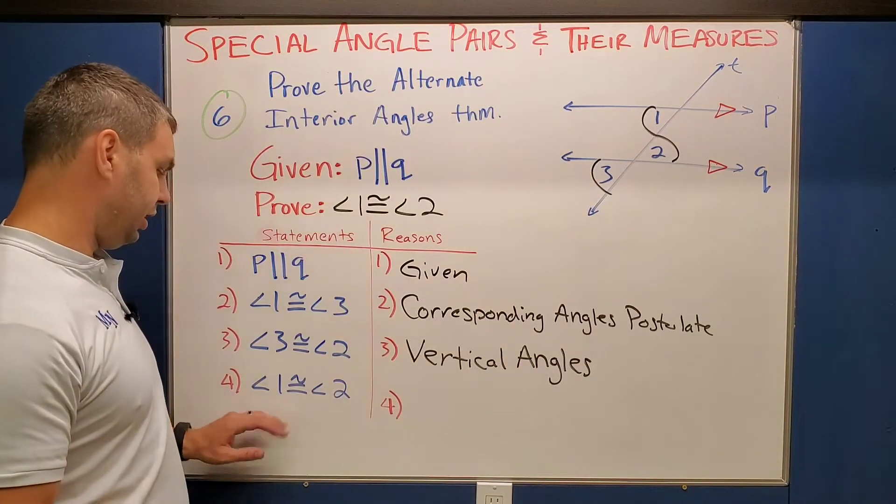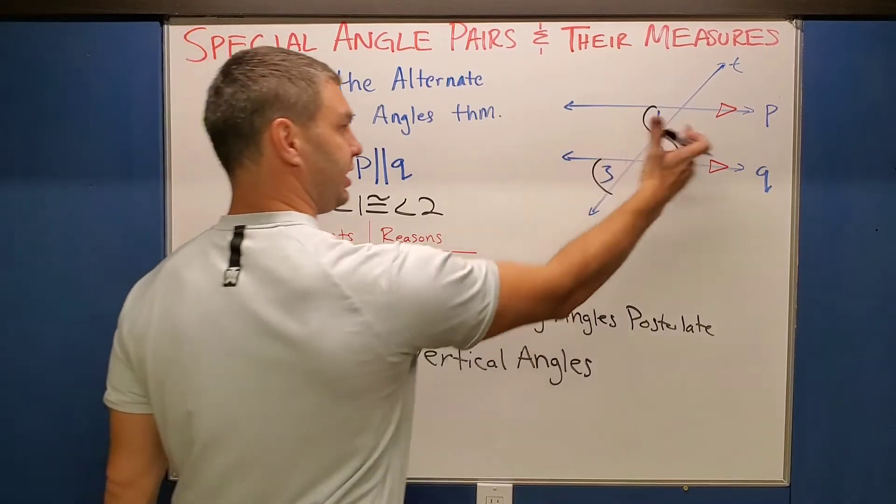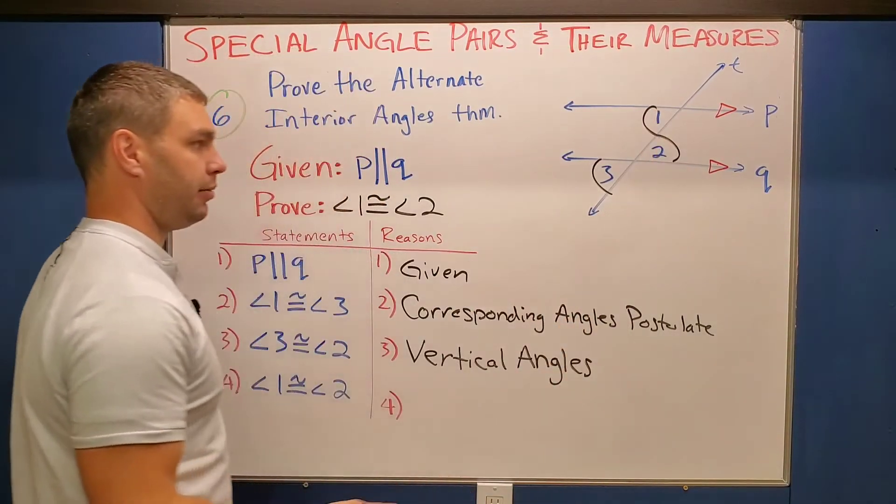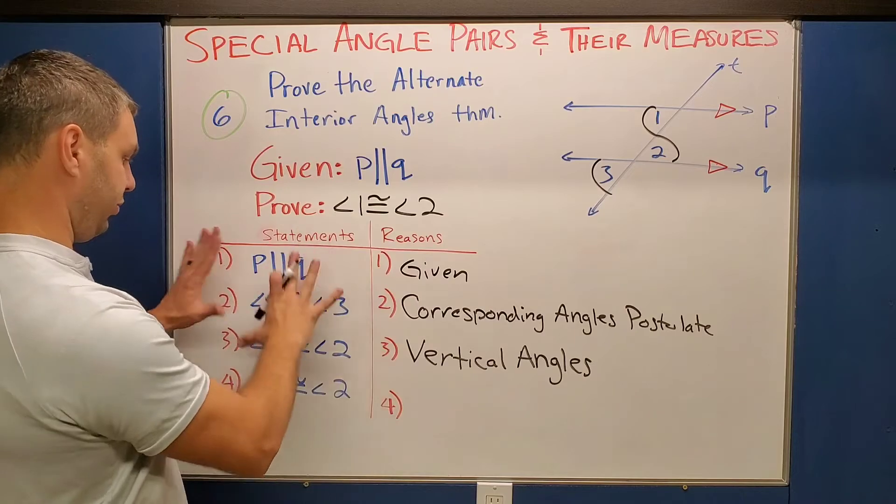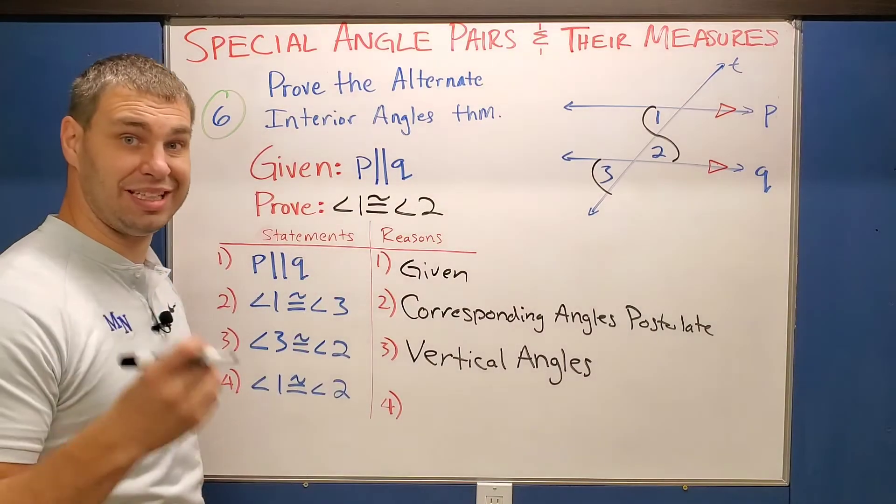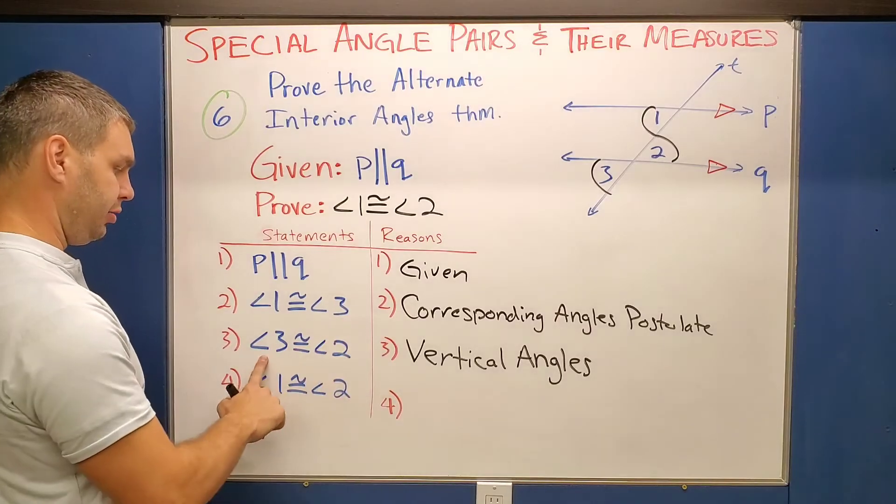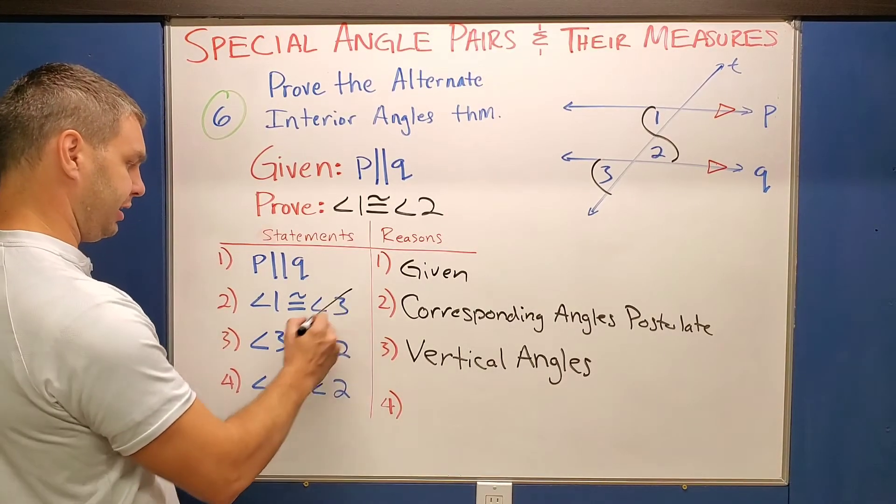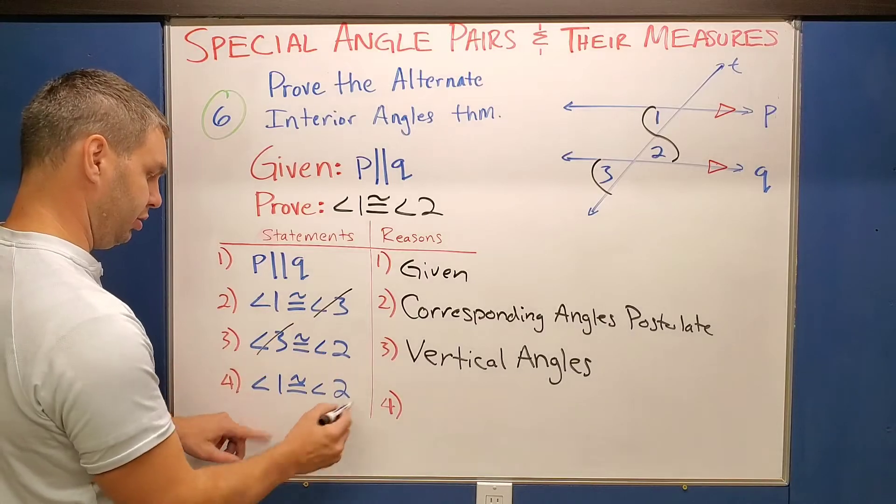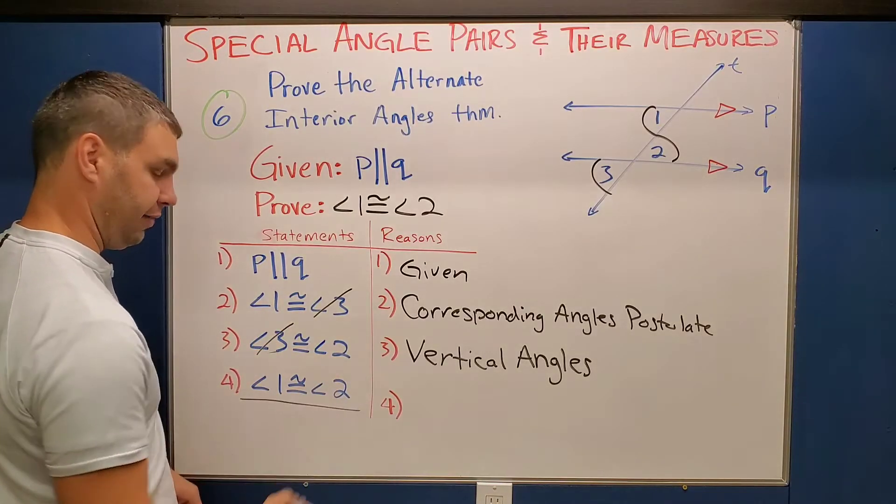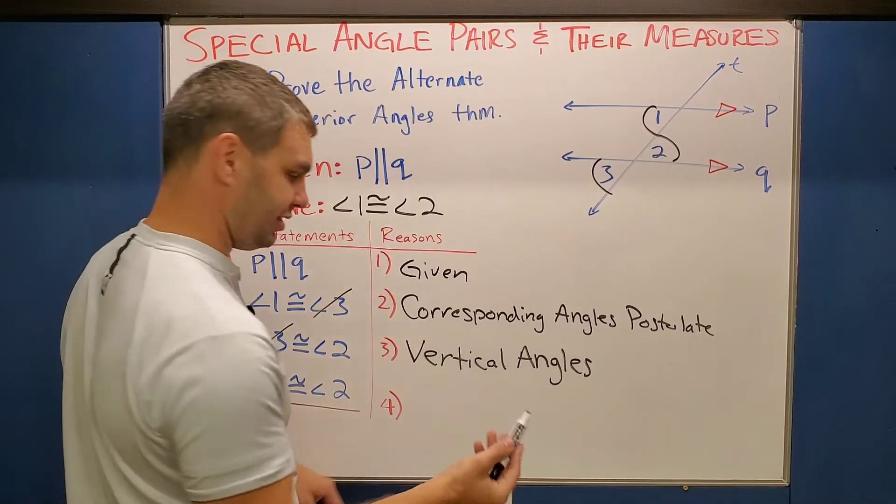And then lastly, angle one is congruent to angle two. We can see that they both have the same loops now. They're congruent based off of our lines before this because of the transitive property. If you look at one being congruent to three, and three being congruent to two, if I cross out that middle man of three, now one is congruent to two, which is what line four tells us. So this is by the transitive property.